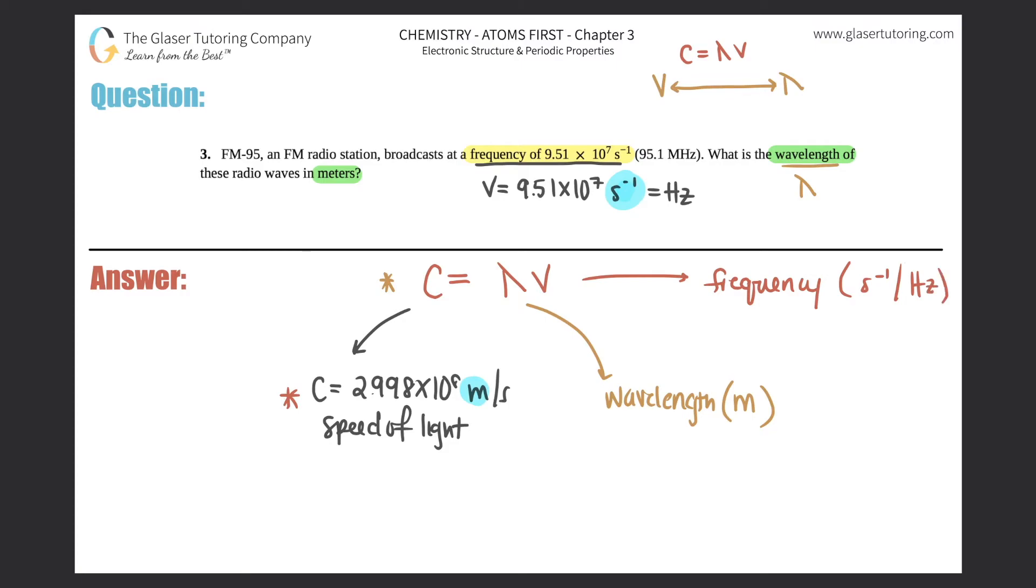Plug in and solve. We know the speed is 2.998 times 10 to the eighth equals lambda times 9.51 times 10 to the seventh. Divide by 9.51 times 10 to the seventh on both sides.